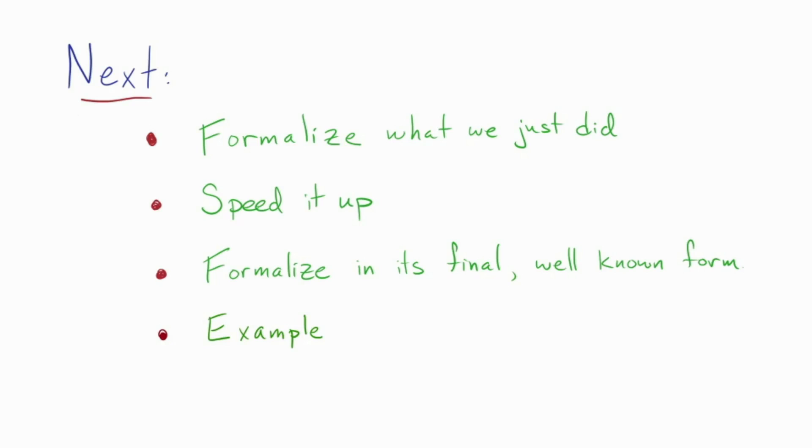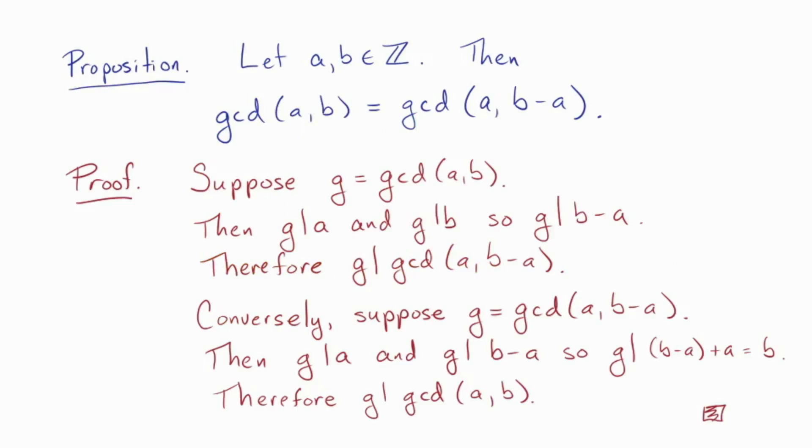All right, so remember, the core of our algorithm was this. The GCD of A and B is the same as the GCD of A and B minus A. So here's a proof of that fact, but it's a little bit boring. This type of formalism is important, but the picture proof is so much more visceral in this case. So you can pause the video if you'd like to enjoy a little logical walk in the park, and otherwise let's move on.